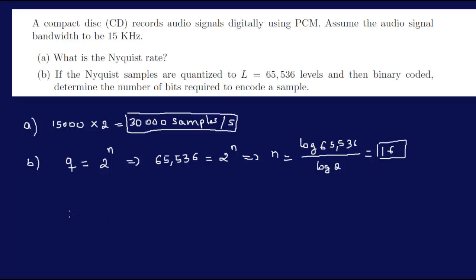So we need 16 bits for L as 65,536. That's it. Pretty straight. Thanks.